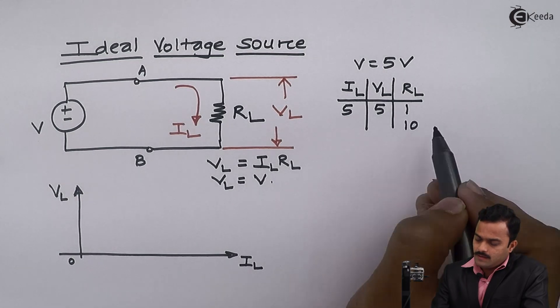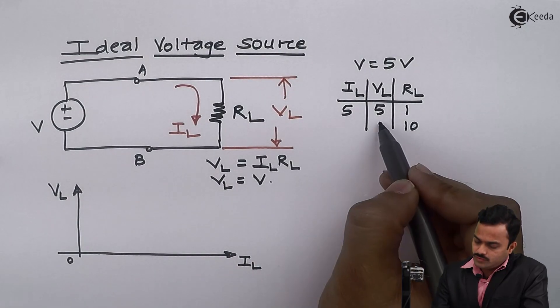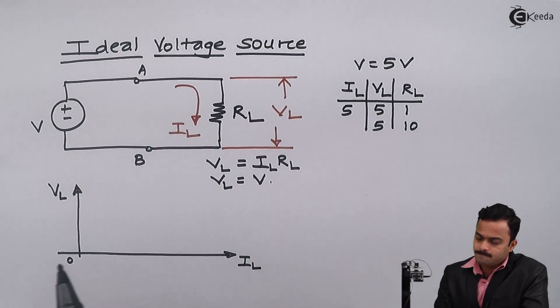Let's take RL as 10 ohm. Again battery is 5 volt, so VL will remain 5 only, and if I solve I'll get IL as 0.5 ampere.